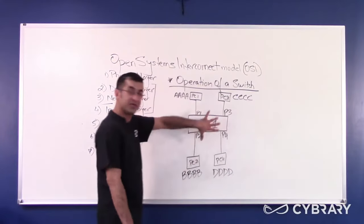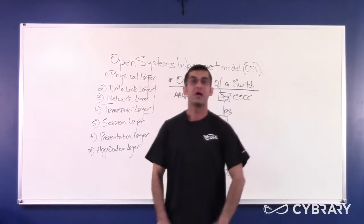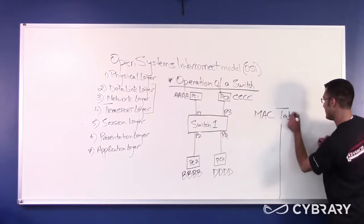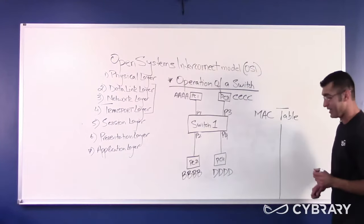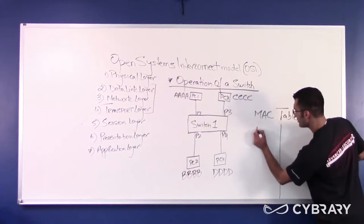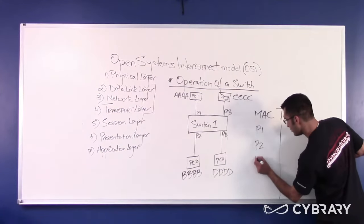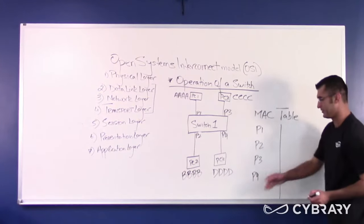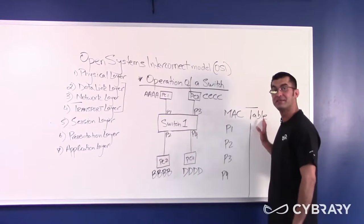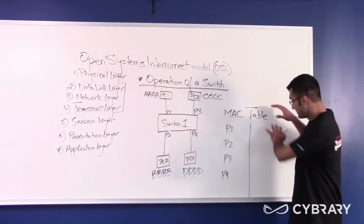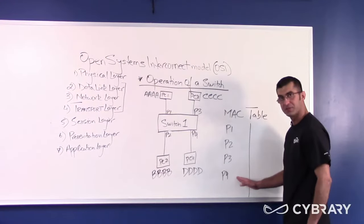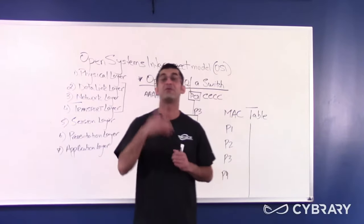Inside of a switch in software, there exists a table called a MAC address table. The MAC address table is a listing of all ports on the switch — port one, two, three, four, and other ports if the switch has them — and the MAC addresses of the devices connected at the other end of each port. So once populated, P1 will have AAAA in front of it. When a switch is brand new and devices first get connected, this MAC address table is completely empty.